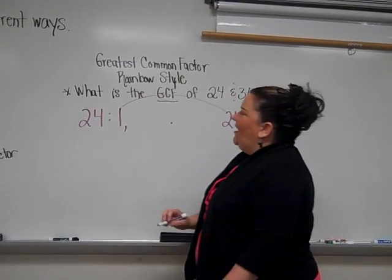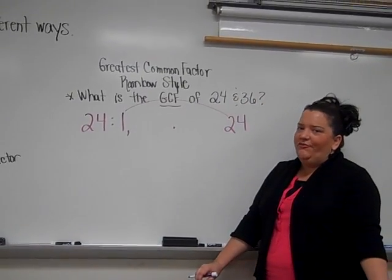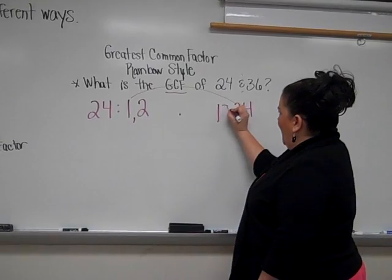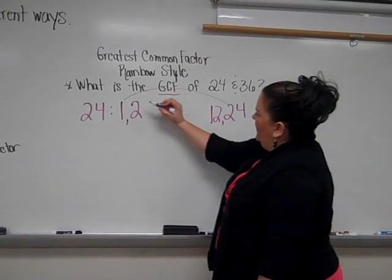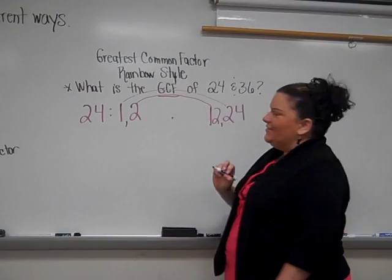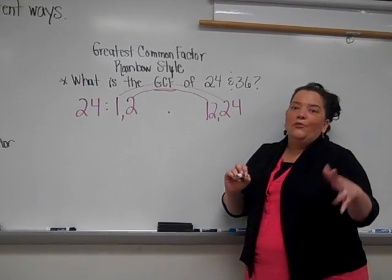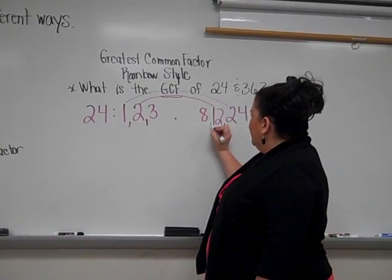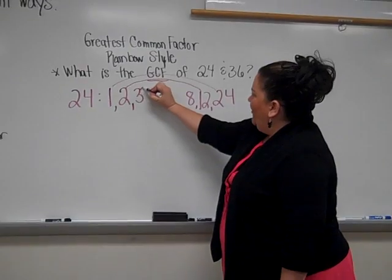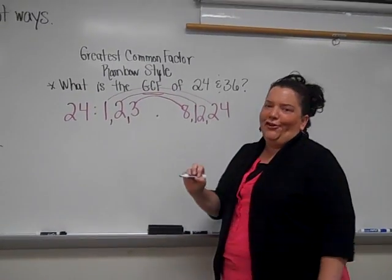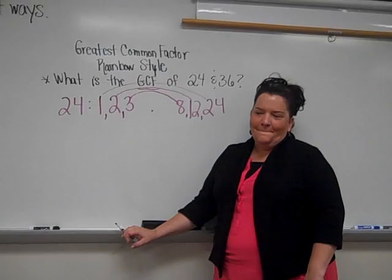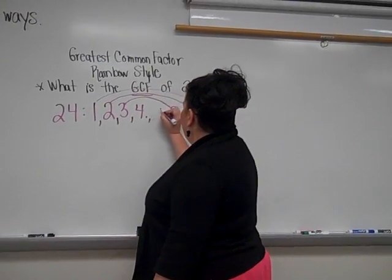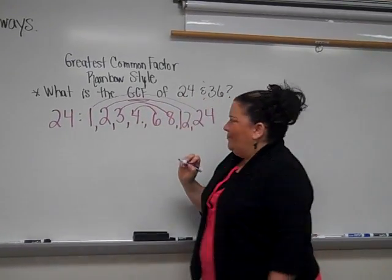Please put a comma, and then we know 2 goes into 24 evenly. So we're going to list 2, and then the other side of the rainbow, we'll put the 12. Connect those two factor pairs. Moving on to 3, we know 3 times 8 is 24. There's another rainbow stripe, or factor pair. And then finally, 4 and 6. That will be your last rainbow stripe.